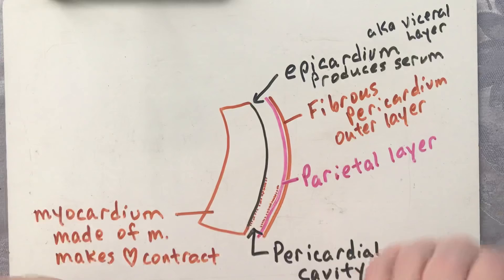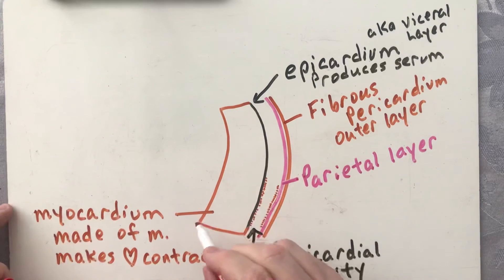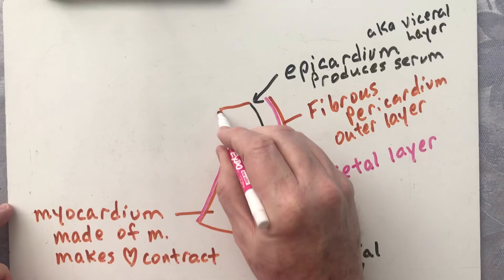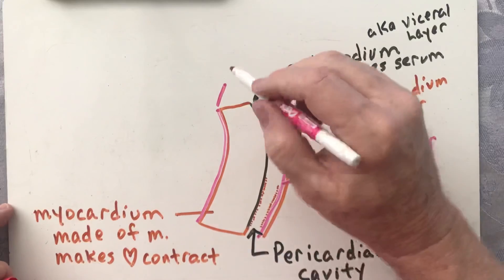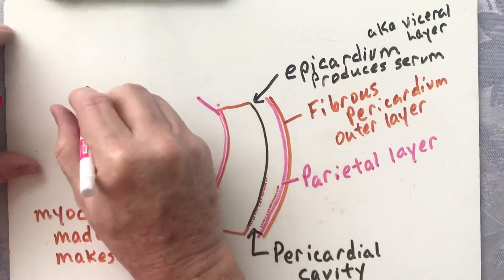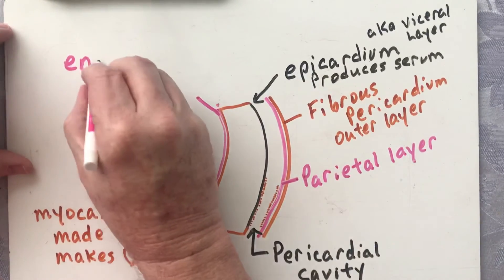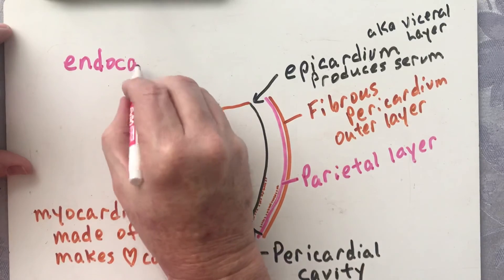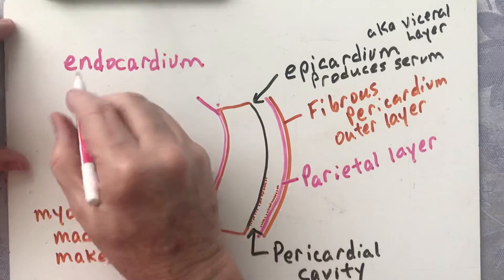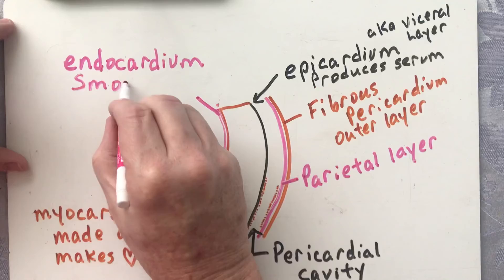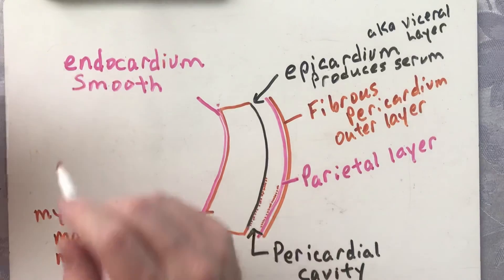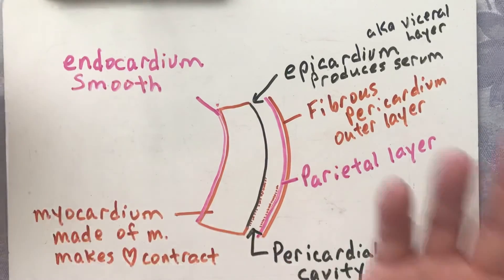The last layer is a very thin layer that covers the inside of the heart and also covers the valves. It is called the endocardium. The endocardium is smooth because it also reduces friction. It's made up of epithelial cells and lines the inside of the heart.